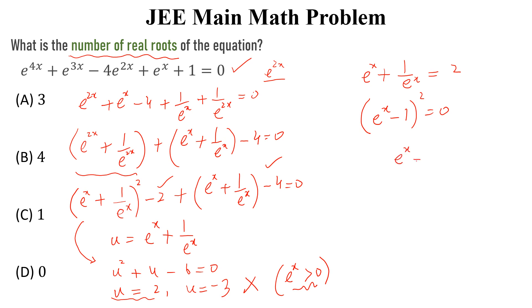And we can write this as e to the power x minus 1 whole square is equal to 0 and e to the power x is equal to 1 and this implies x is equal to 0. So, this is the only real solution of this equation.